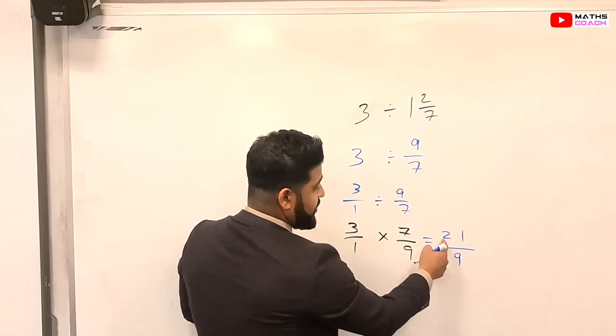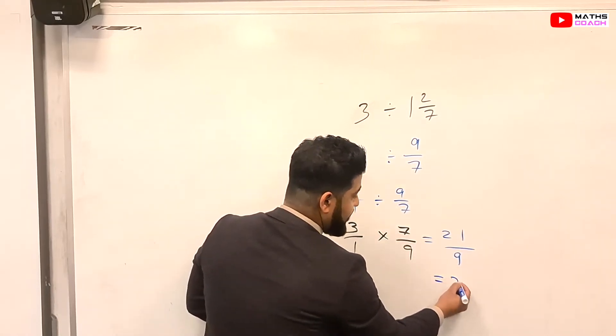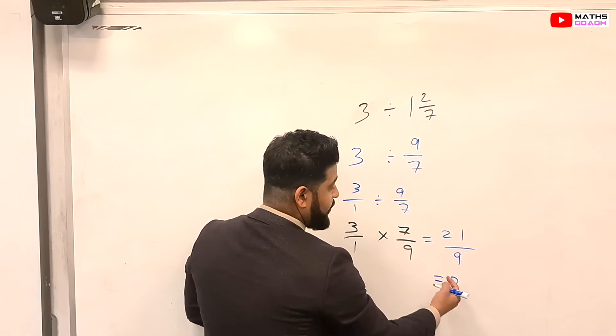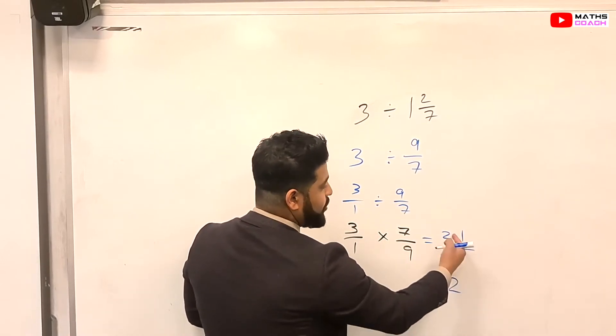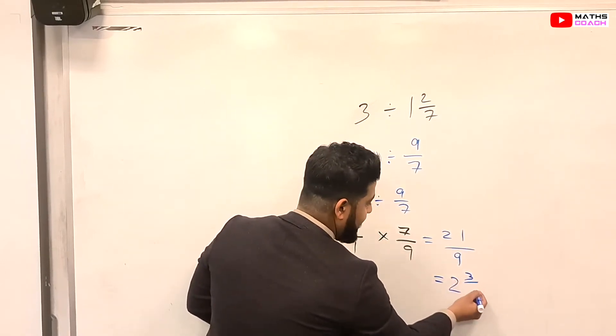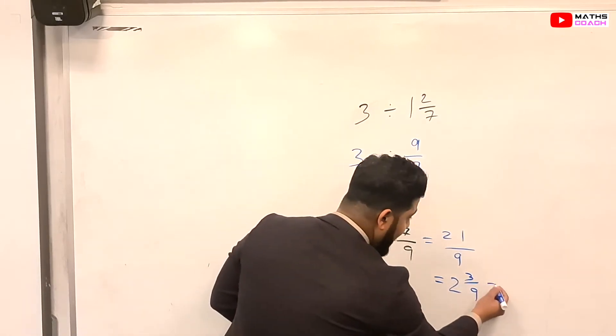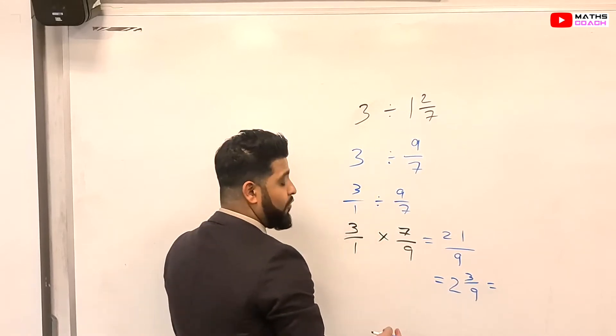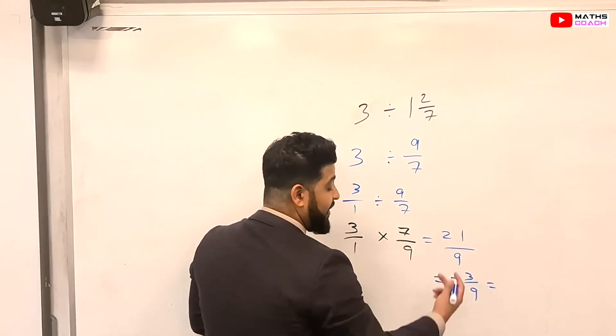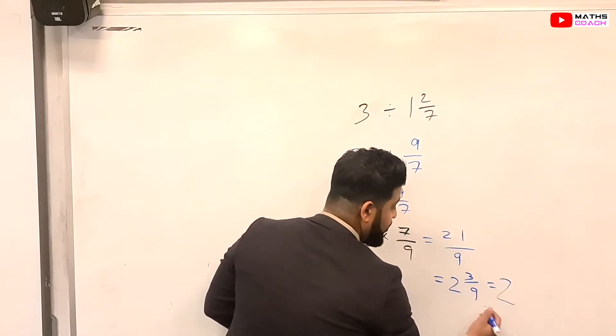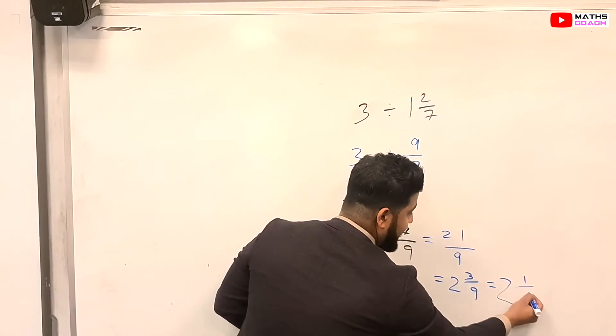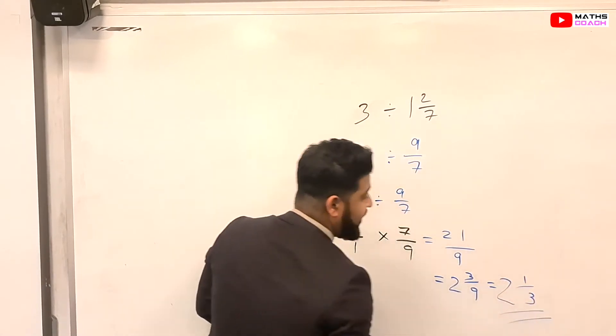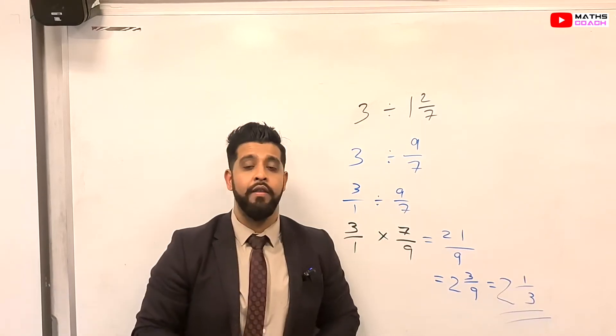Just for fun. So 3 times 7 equals 21, and then 1 times 9 is 9. Now, 9 goes into 21 how many times? It goes in twice. And the leftover from 2 times 9 is 18. So 18 to 21 is 3, so the leftover is 3/9. Now, we have to simplify this fraction because 3 over 9 can be simplified by dividing by 3. So we end up with 2, 3 divided by 3 is 1, and 9 divided by 3 is 3. So the final answer is 2 and 1/3.